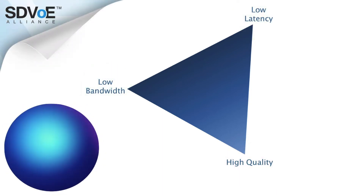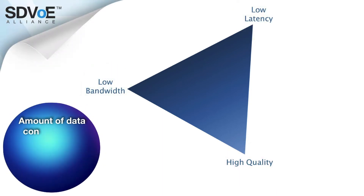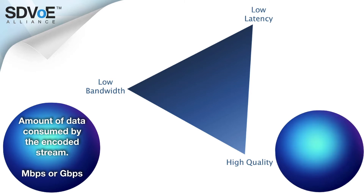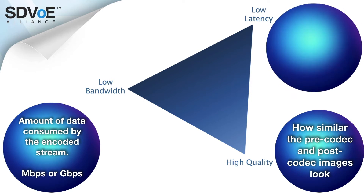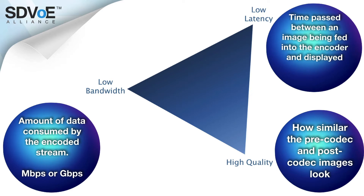Bandwidth is the amount of data consumed by the encoded stream, and is measured in megabits per second or gigabits per second. Quality is how similar the pre-codec and post-codec images look. Latency is how much time passes between an image being fed into the encoder and the same image being displayed on a display after being decoded.